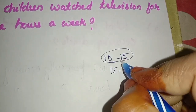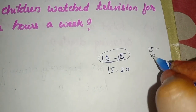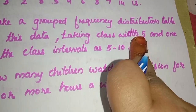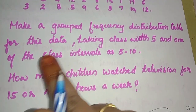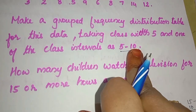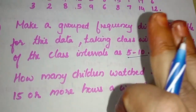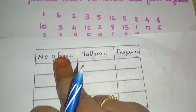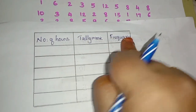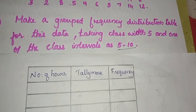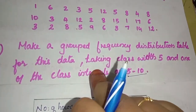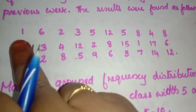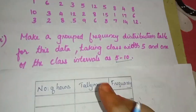This is the number of hours. We will have a class width of 5. We will do the grouped frequency distribution table with the number of hours as the tally mark and frequency columns. We will say the class interval starts at 5 to 10. We will start from the lowest value of 1. One class interval is 5 to 10.